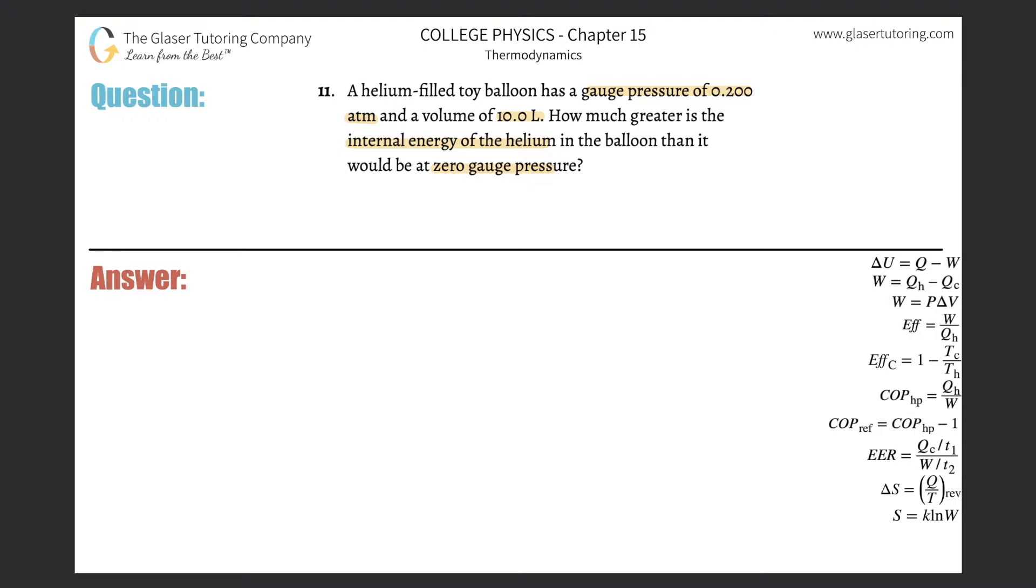All right, so we basically need to use this formula where the change in internal energy will be equal to 3 over 2 times the change in pressure multiplied by the volume. If you're wondering where this formula came from, please check out number 10. I basically derived it from two other formulas.